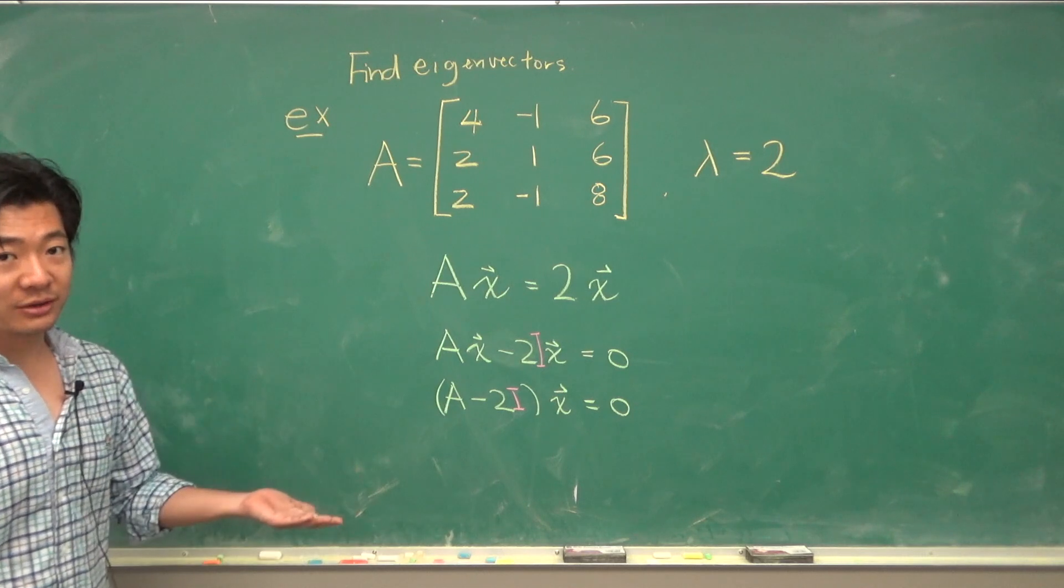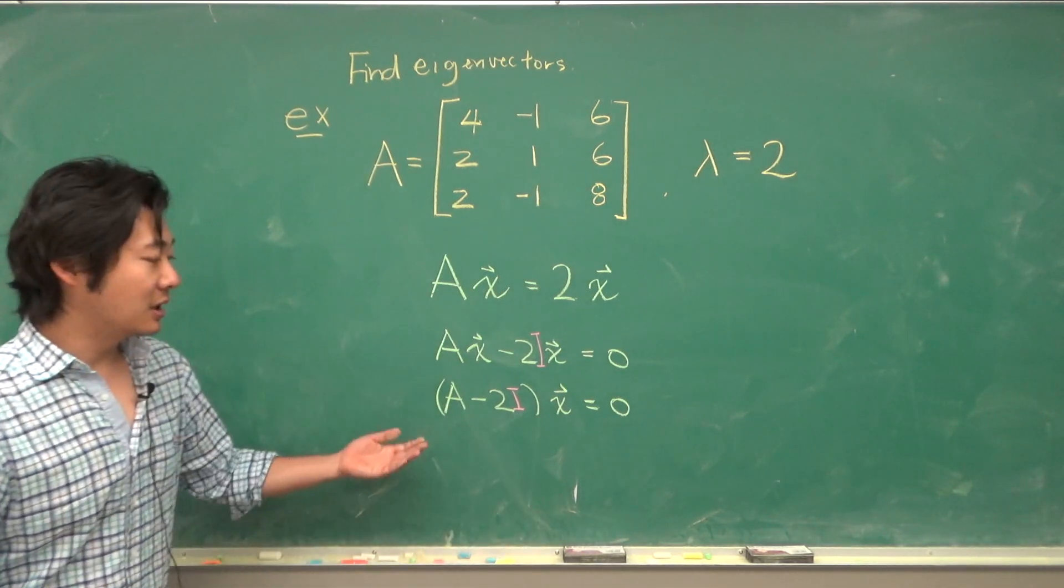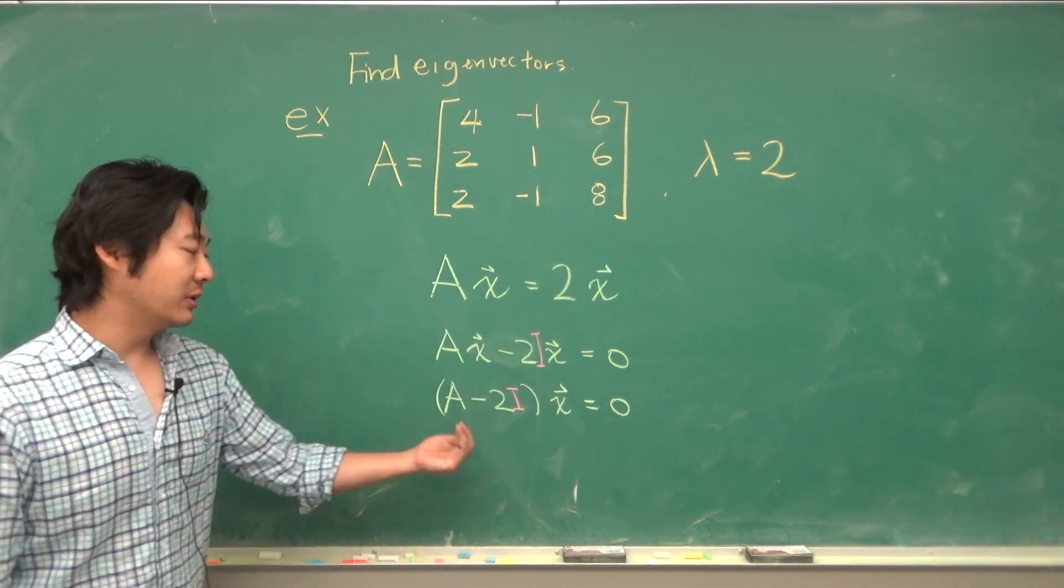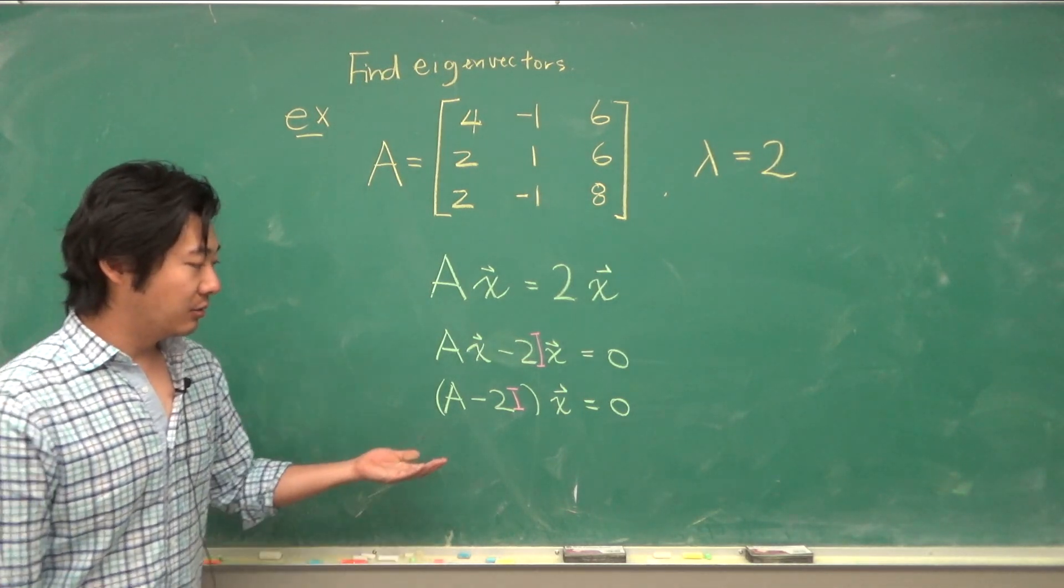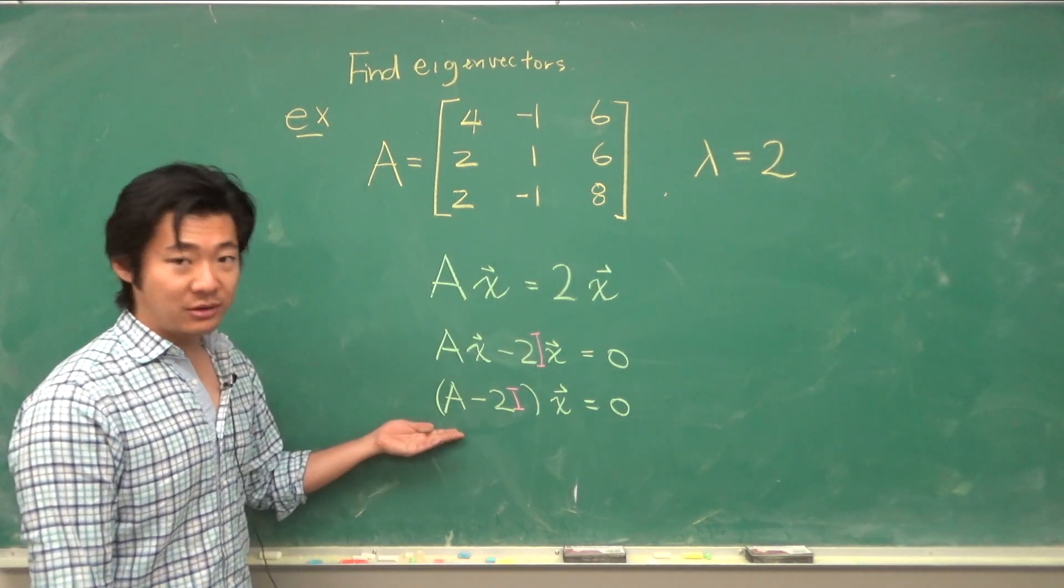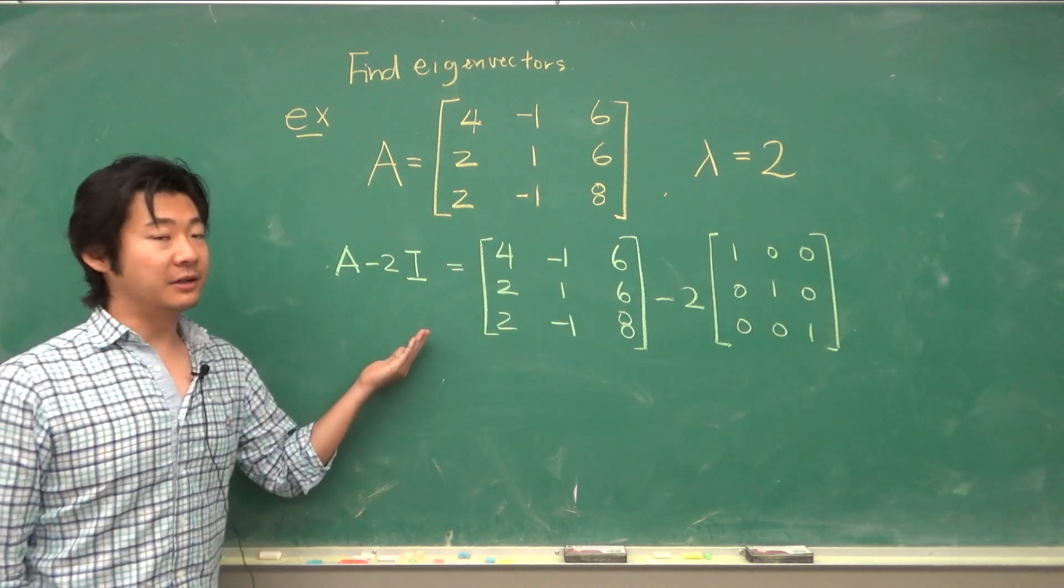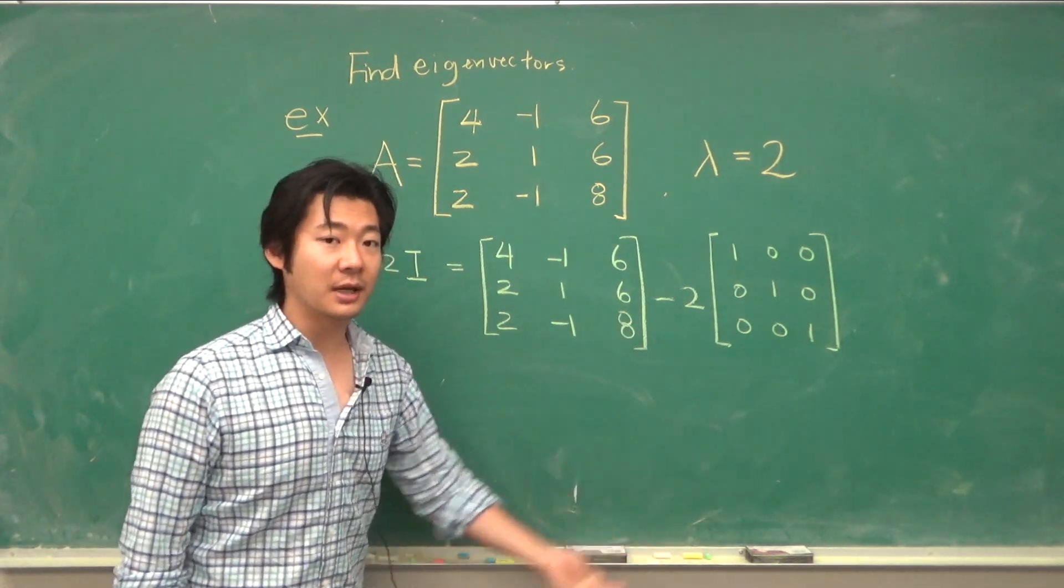This is just a homogeneous equation. So to find solutions, we set up the augmented matrix. We know what A is, and we know what 2 times the identity is, and so we'll know the coefficients of this matrix. So we have A minus 2I, which is this, A minus 2 times I.